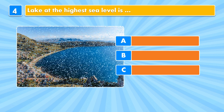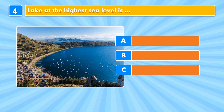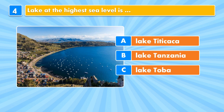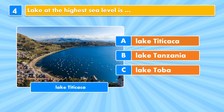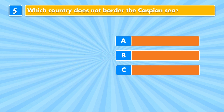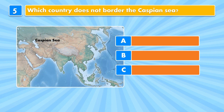Question four: the lake at the highest sea level is Lake Titicaca, Lake Tanzania, or Lake Tobo? Answer: Lake Titicaca. Question five: which country does not border the Caspian Sea?